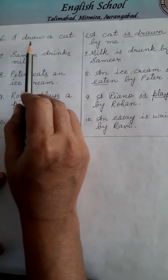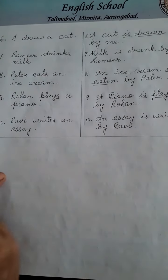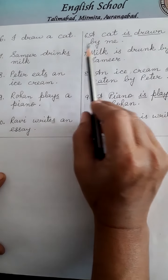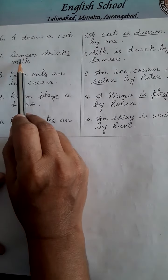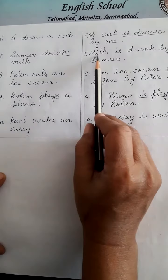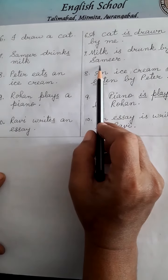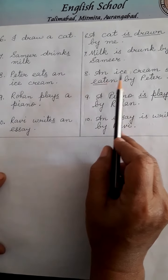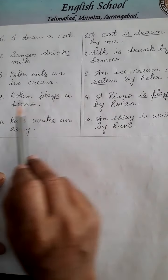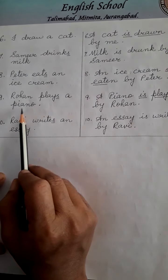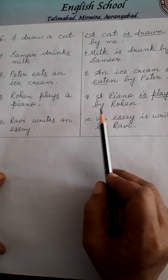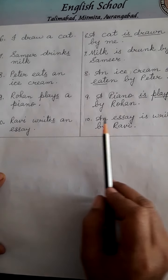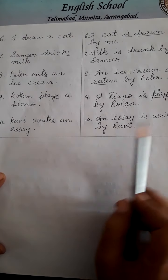Sixth: I draw a cat (active voice) → A cat is drawn by me. Seventh: Samir brings milk → Milk is brought by Samir. Eighth: Peter eats an ice cream → An ice cream is eaten by Peter. Ninth: Rohan plays a piano → A piano is played by Rohan. Tenth: Ravi writes an essay → An essay is written by Ravi.